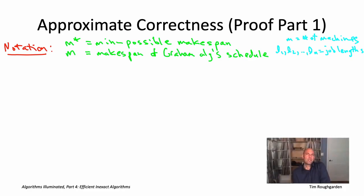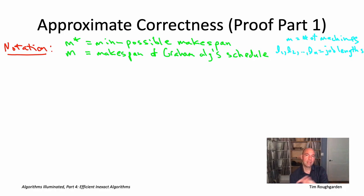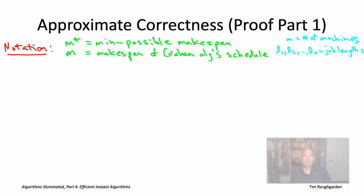It's pretty tricky to directly compare M and M star, so instead we're going to introduce two intermediate quantities: one is the maximum job length, the other is the average machine load, which will then be able to relate directly to both M and M star, giving us a relationship between the two.